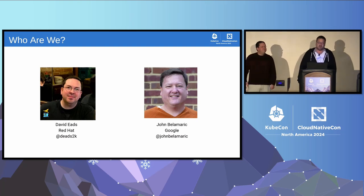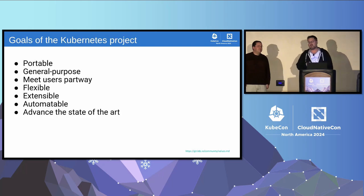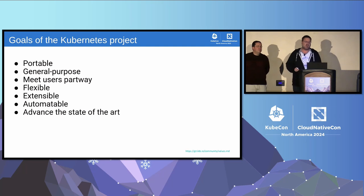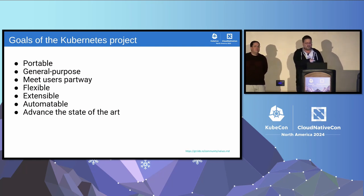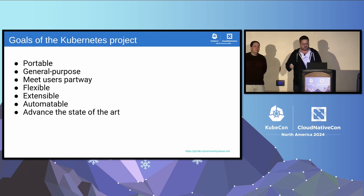SIG Architecture fits in the big picture for Kubernetes. Essentially, SIG Architecture owns the design principles, architectural principles, and a lot of the development policies for the Kubernetes project. We work to make sure that everything that gets built follows goals of portability, meeting users partway, flexible, extensible, and ensuring those general principles.